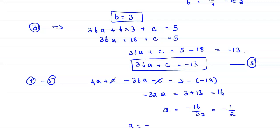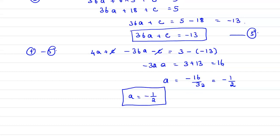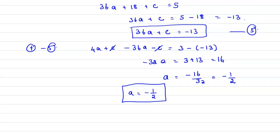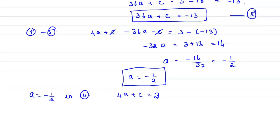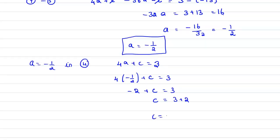Now find c by substituting a = -1/2 into equation 4: 4(-1/2) + c = 3, so -2 + c = 3, which implies c = 3 + 2 = 5. Hence c is equal to 5.